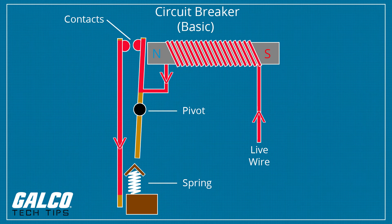When the current jumps to unsafe levels, the electromagnet is strong enough to pull down a metal lever connected to the switch linkage. The entire linkage shifts, tilting the moving contact away from the stationary contact to break the circuit.